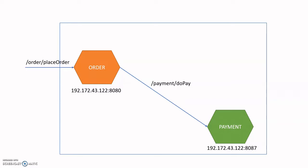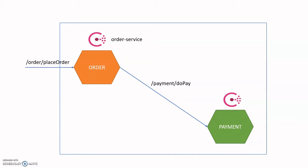What if we could find a solution where the services communicate with each other on the basis of the application name or DNS? HashiCorp came up with a tool that can do this. Other than HashiCorp Consul, you have Eureka Server, but Consul is more robust and configuration is much easier. When Consul comes into the picture, the IP addresses vanish and in place of IP addresses the names of the services are used.